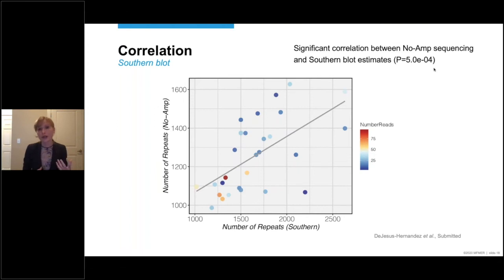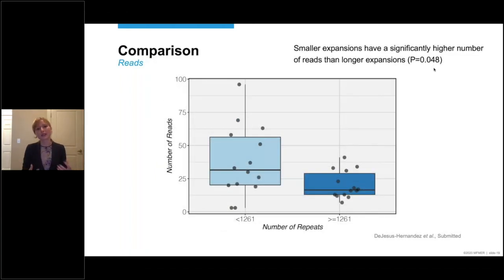If it's red, yellow, or orange, the number of reads is relatively high. Whereas if it's dark blue, it's relatively low. And as you can see in the bottom left corner, there are quite a few people with a relatively high number of reads. So that suggests that if you have a smaller expansion, you may have a higher number of reads. And that is confirmed in this box plot.